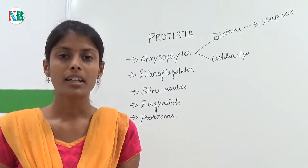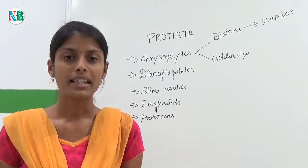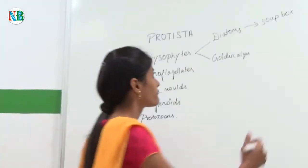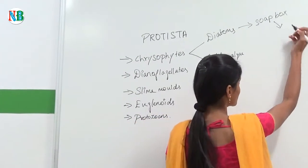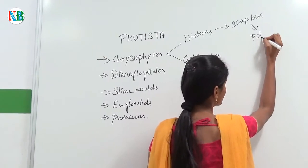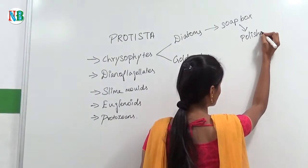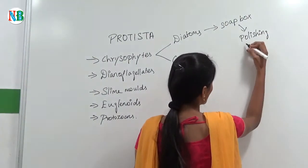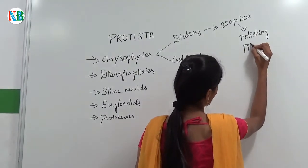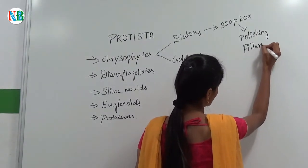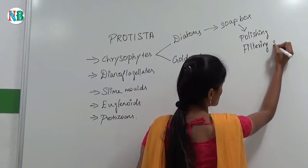Because of the silica, their cell wall is indestructible. Large amounts of cell walls are deposited in the soil and that is called diatomaceous earth, and that soil is used for polishing and filtering syrups.